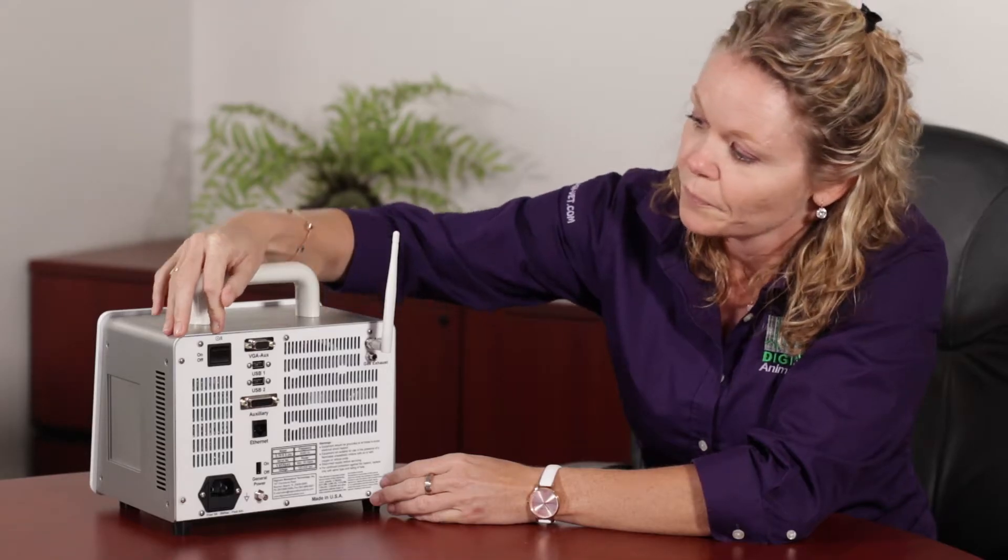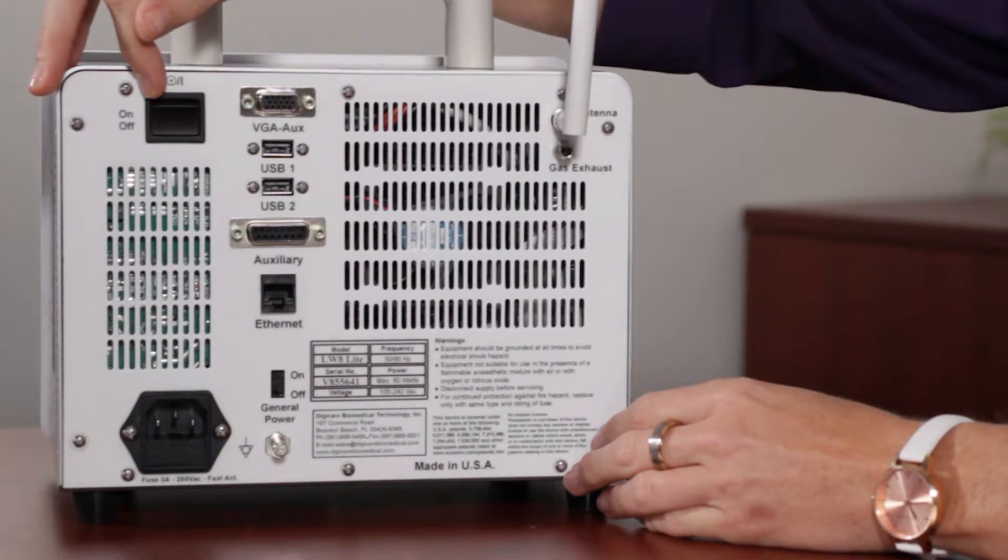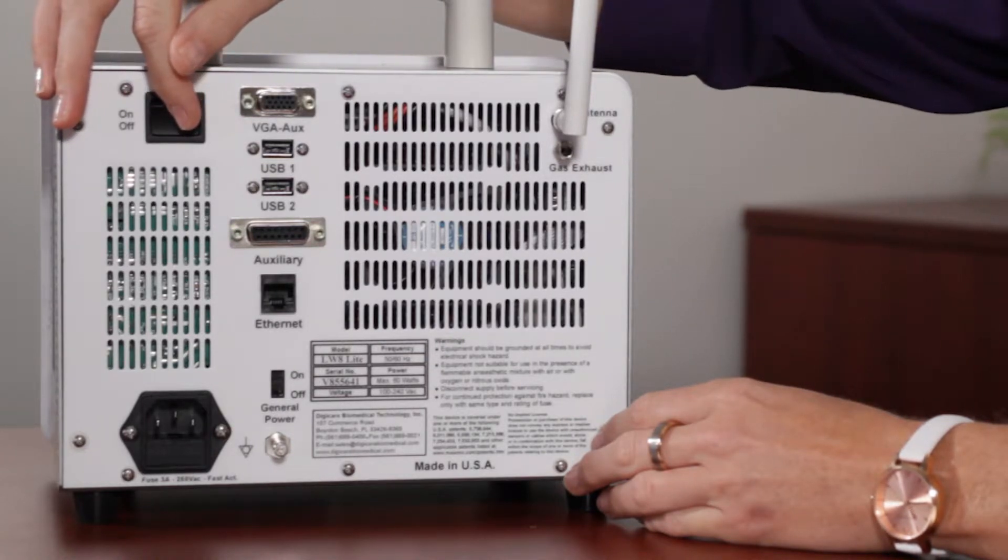The back panel of the life window. This is the on-off switch. This is how you would turn the monitor on. You do have to do a double toggle to turn the monitor on.